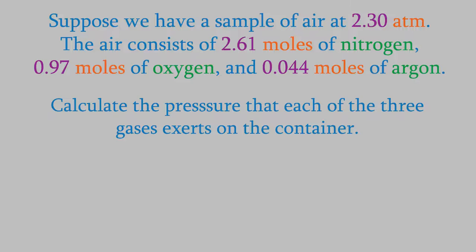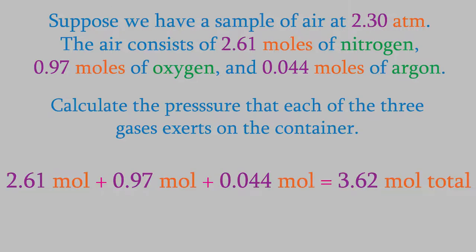The total pressure depends on the amount of gas, and that's what the moles tell us. So, the first thing we need to know is the total number of moles. When we add the moles of each gas, we get 3.62 moles total. Now that we know that, we can find the pressure for each individual gas.